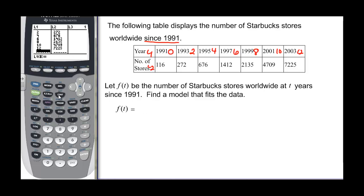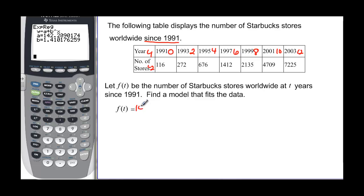And now I'm ready to just go find the regression. So stat, I'm ready to calculate and 0. Exponential regression. So I'm going to see that it's exponential because I've got a small number to a very large number very quickly. And when I find that exponential regression, I have 142.21 times 1.41 to the t.